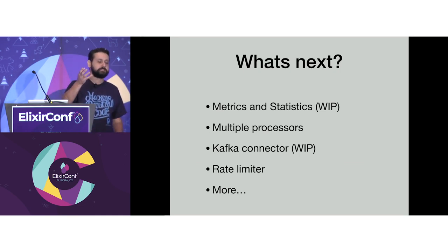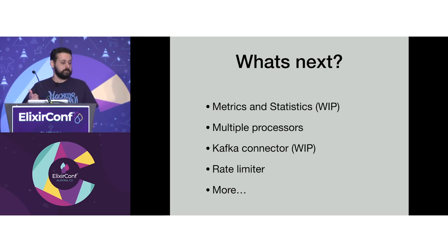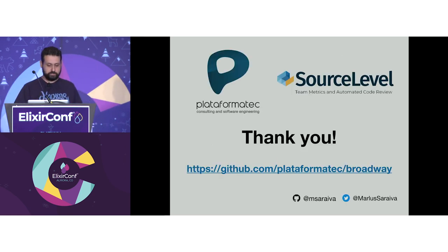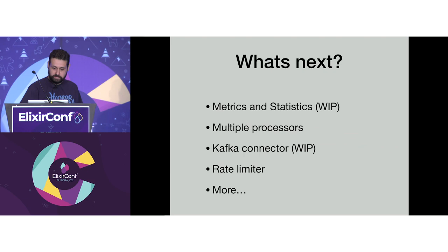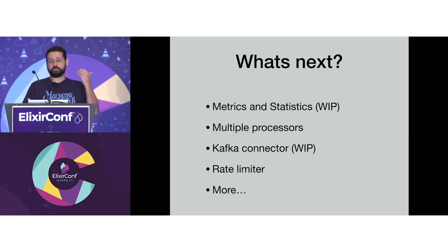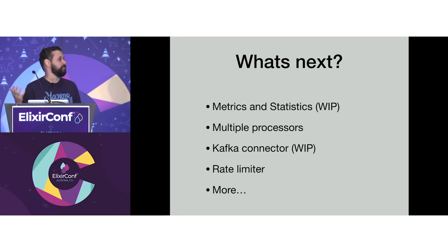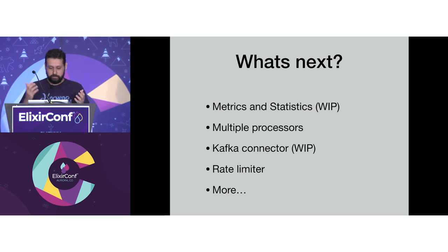What's next? Metrics and statistics, that's what we're working on. Multiple processors, a Kafka connector — we're already working on it — and rate limiting, along with a bunch of other features. If you want to discuss new features, there are a lot of open issues on GitHub. You can look at the issue tracker, follow the discussions. If you have any questions, I'll be around — if you want to talk about Broadway or anything else, come say hello.